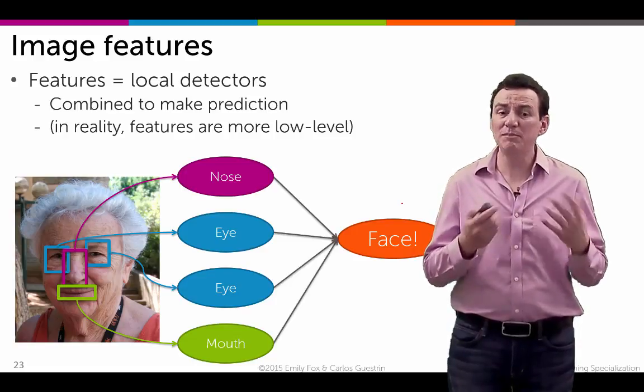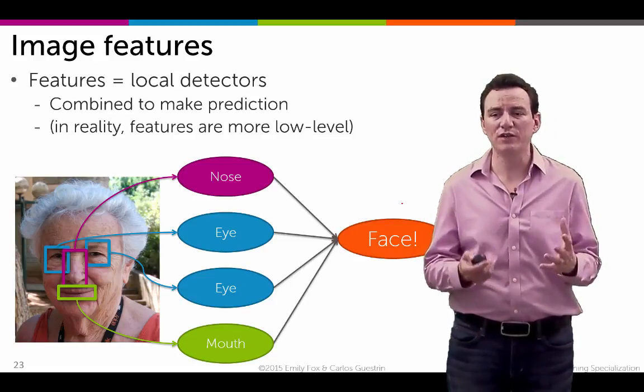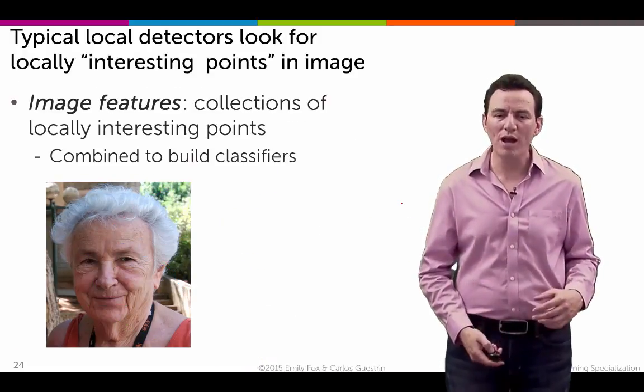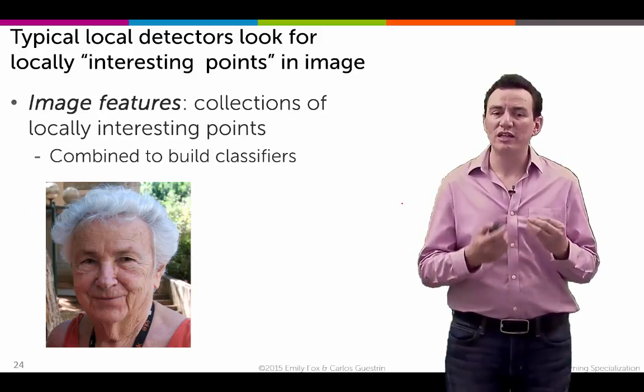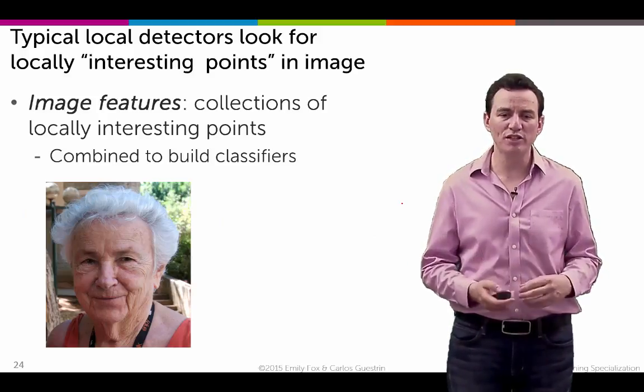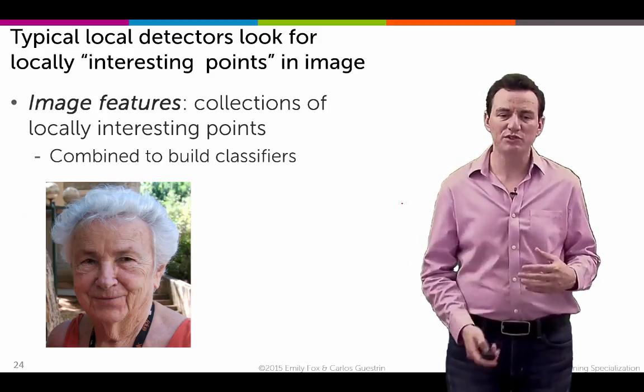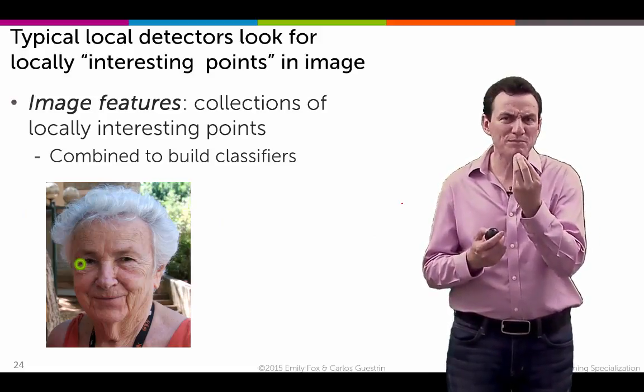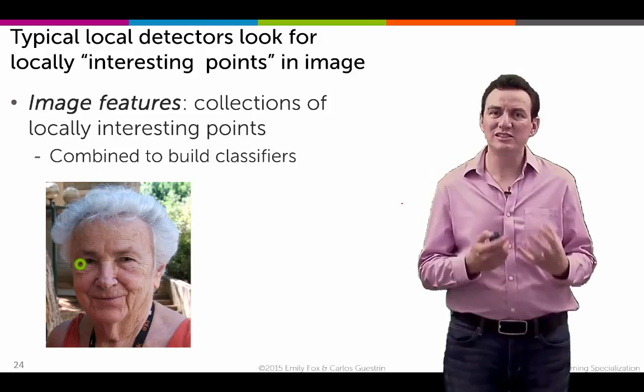Now this is a simple example of how we can build a classifier for images, but in reality you don't explicitly have a nose detector or an eye detector. What happens is you use what are called image features or interest points. There's various names for this, but they really try to find local image segments, patches that are really distinctive.